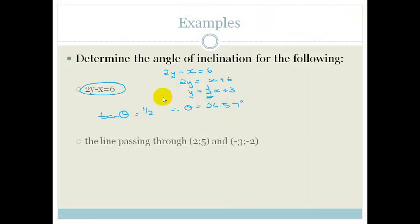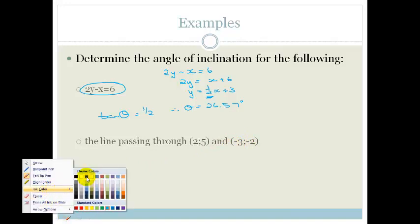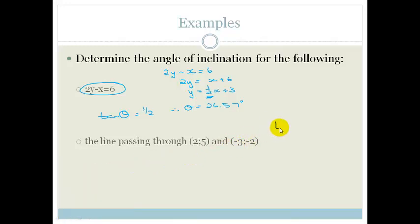Let's do another example. Now it says the line is passing through the points 2, 5 and minus 3, 2. Now grade 11s, remember that when we're looking for the angle of inclination we are just using the fact that tan theta equals m. So we really don't care about the rest of this equation. All we care about is m.